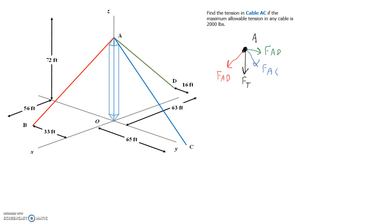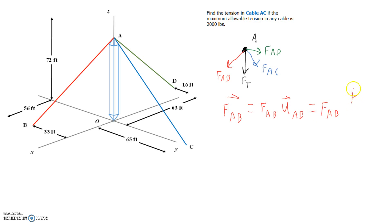Next, we need to represent all these forces in vector form. We can represent a force FAB in vector form as equal to the magnitude of force AB times a unit vector going in the direction between A and B. The unit vector is the position vector going from point A to point B divided by the total length of that vector.